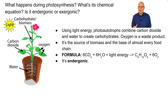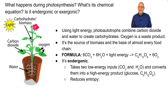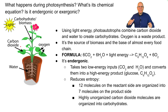Photosynthesis is an endergonic reaction for two reasons: it takes two low-energy inputs — carbon dioxide and water — and converts them into a high-energy product, glucose. It also reduces entropy, meaning it increases organization. There are 12 molecules on the reactant side and seven on the product side, and highly disorganized diffuse carbon dioxide gas is made into solid matter — a huge decrease in entropy.